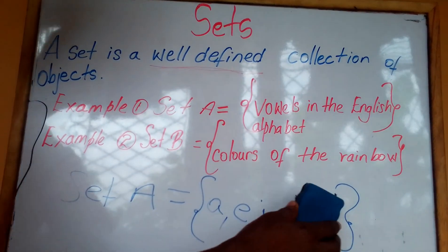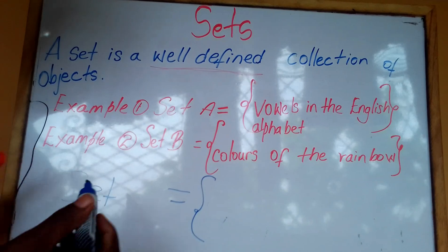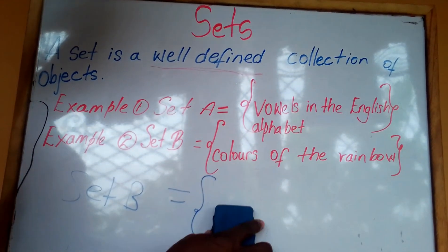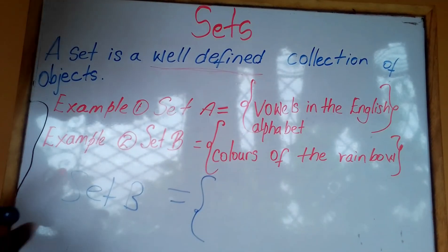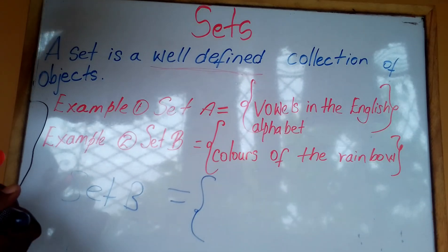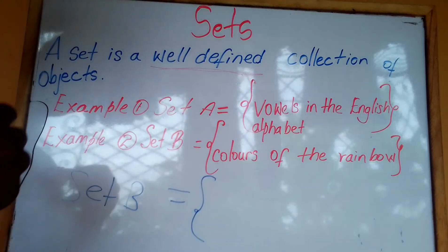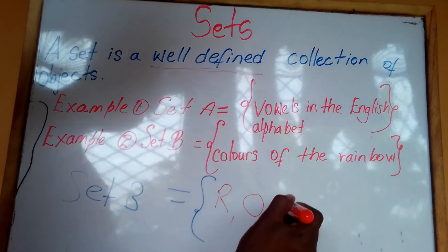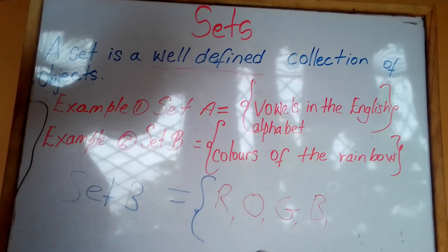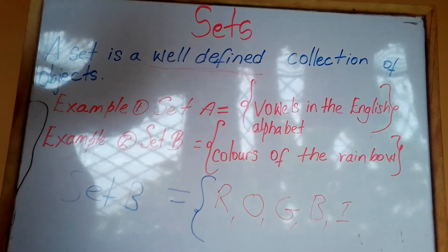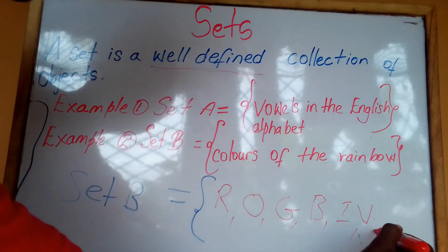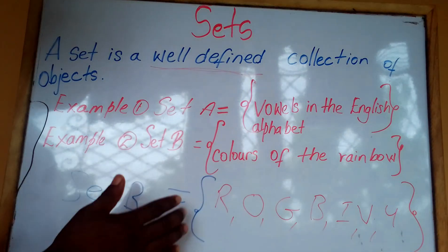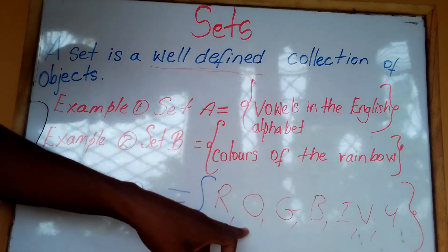Let us look at Set B — the rainbow. We need to list those members. Do you know the colors of the rainbow? The rainbow has seven colors. We have red — R for red, O for orange, G for green, B for blue, I for indigo, V for violet, and Y for yellow.